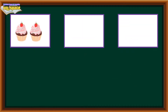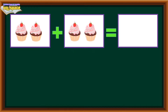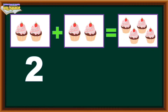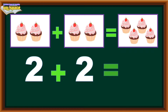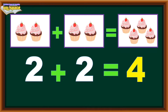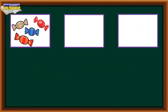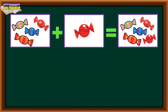2 cupcakes plus 2 cupcakes equals 4 cupcakes. 2 plus 2 equals 4. 5 candies.